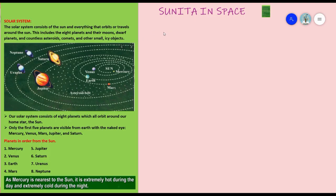In the chapter 'Sunita in Space', today we are going to study about the solar system. The solar system consists of the Sun and everything that orbits or travels around the Sun — the sun and many things which are around the sun.